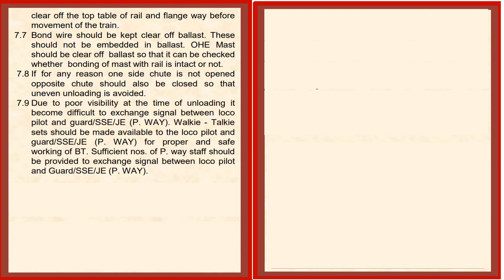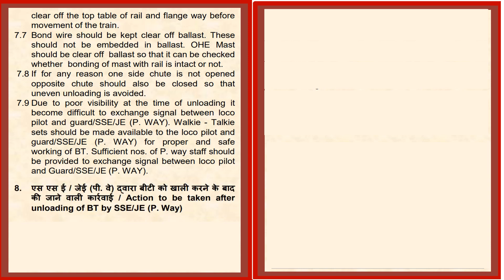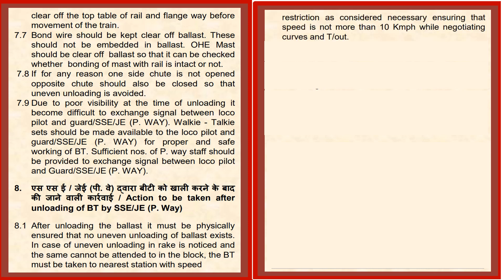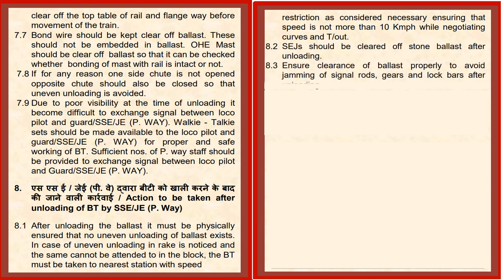Due to poor visibility at the time of unloading, it becomes difficult to exchange signals, so walkie-talkies must always be carried. After unloading, it must be physically ensured that no uneven loading of ballast exists in the rake. If uneven ballast is noticed and cannot be attended in the block, the ballast train must be taken to the nearest station with speed restriction, especially while negotiating curves and turnouts. Clearance of ballast must be properly ensured.